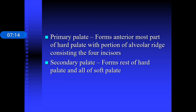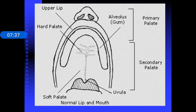The primary palate forms the anteriormost part of the hard palate, containing the portion of the alveolar ridge with the four incisors — that is, the central and lateral incisors. The secondary palate represents the rest of the hard palate and all of the soft palate. This simple diagram represents the entire parts of the palate and is an easy diagram to draw to represent the topic of cleft lip and cleft palate.